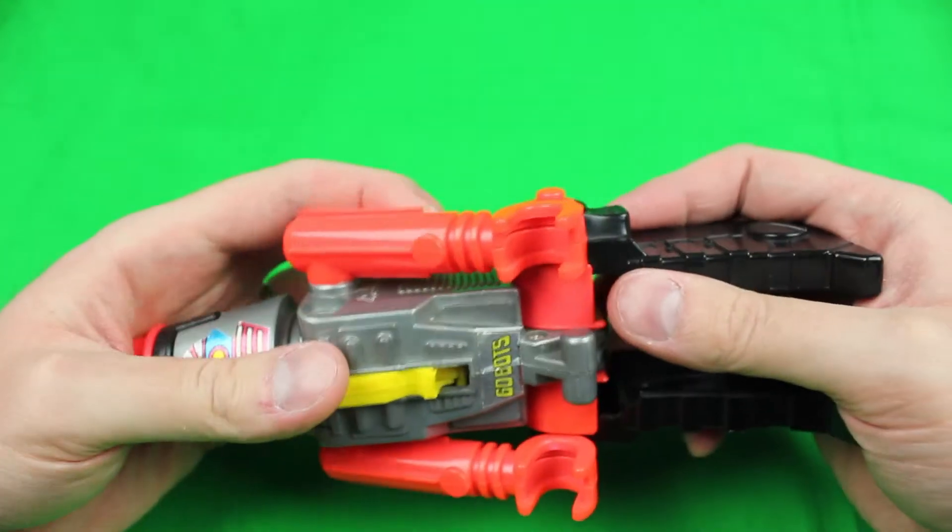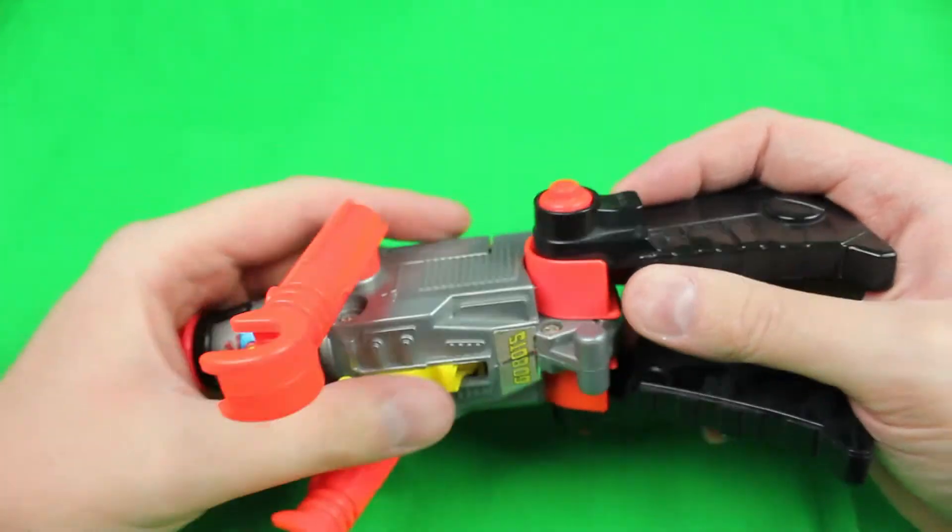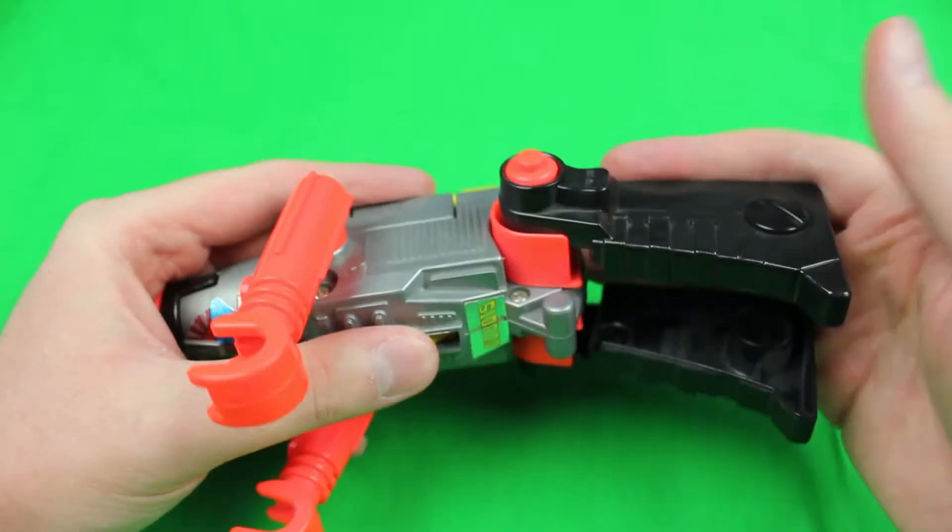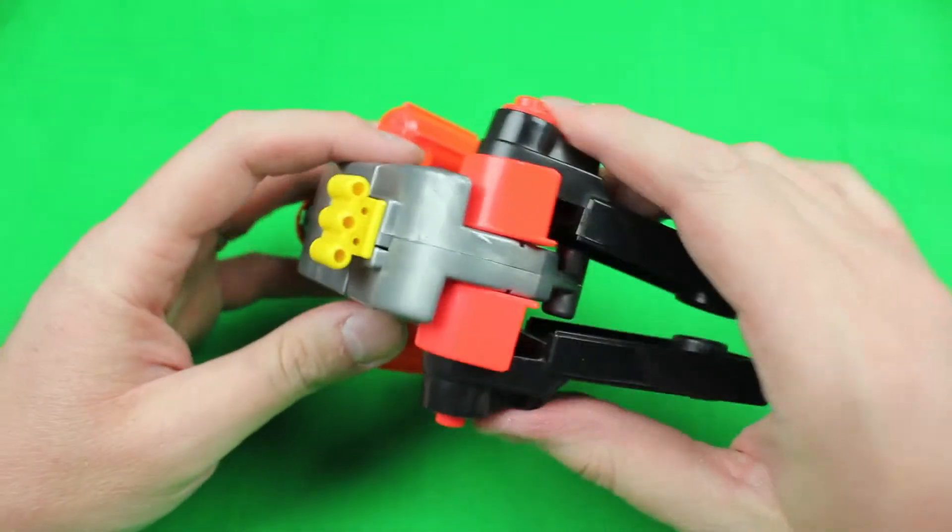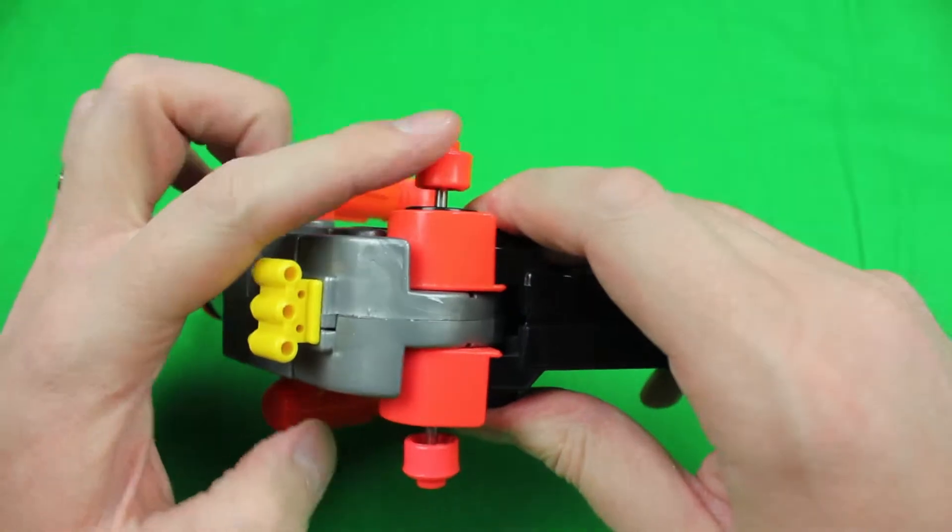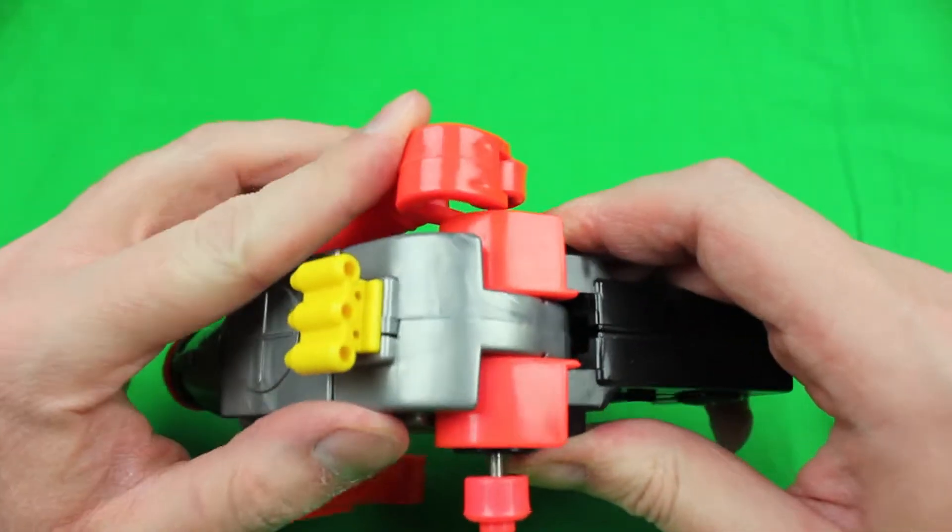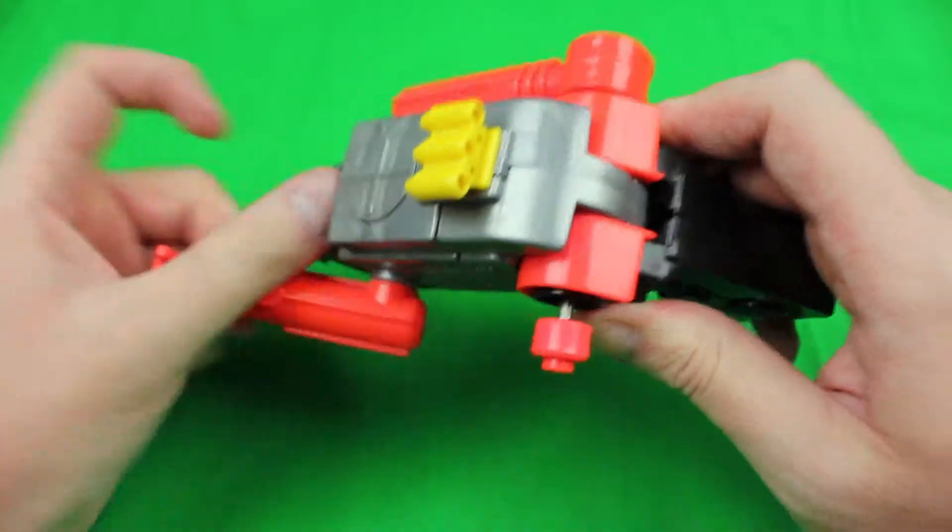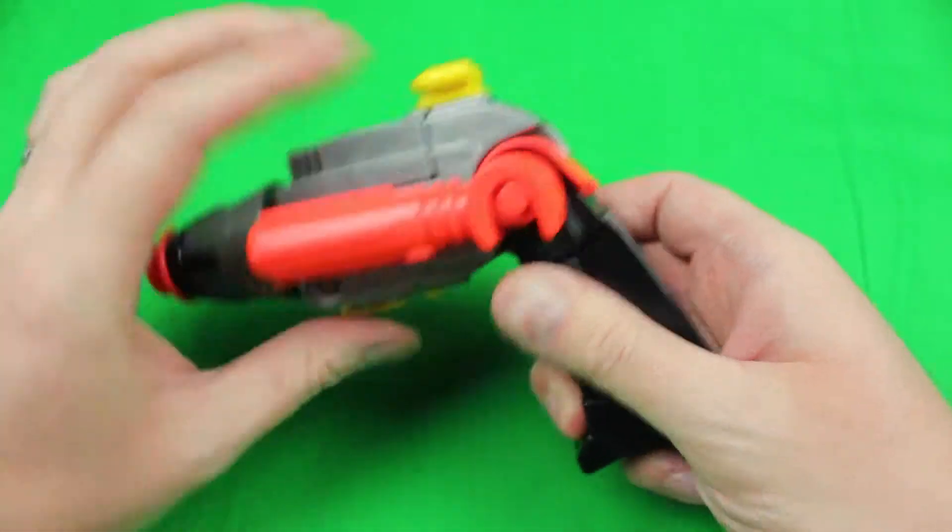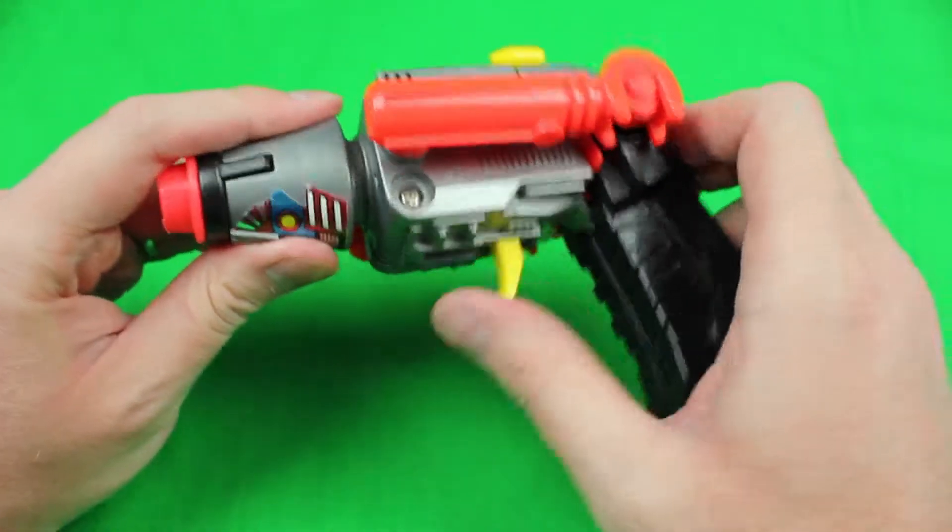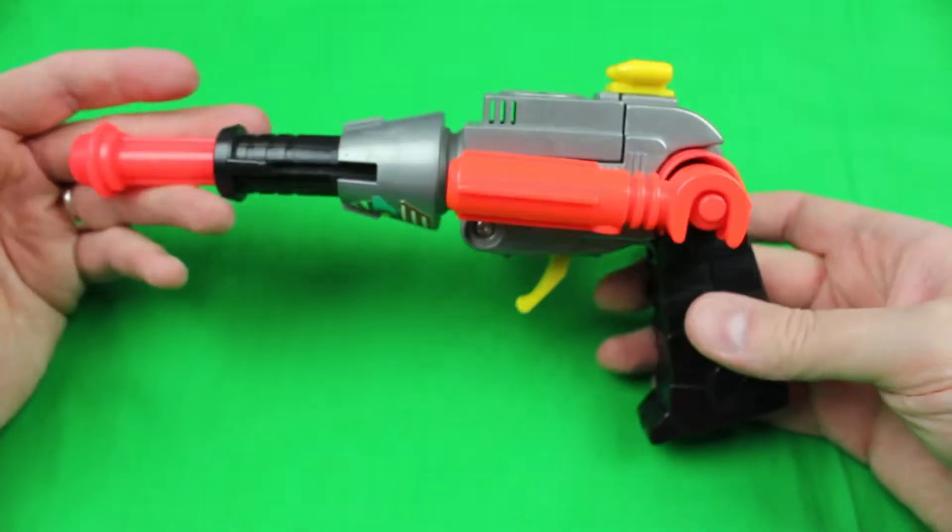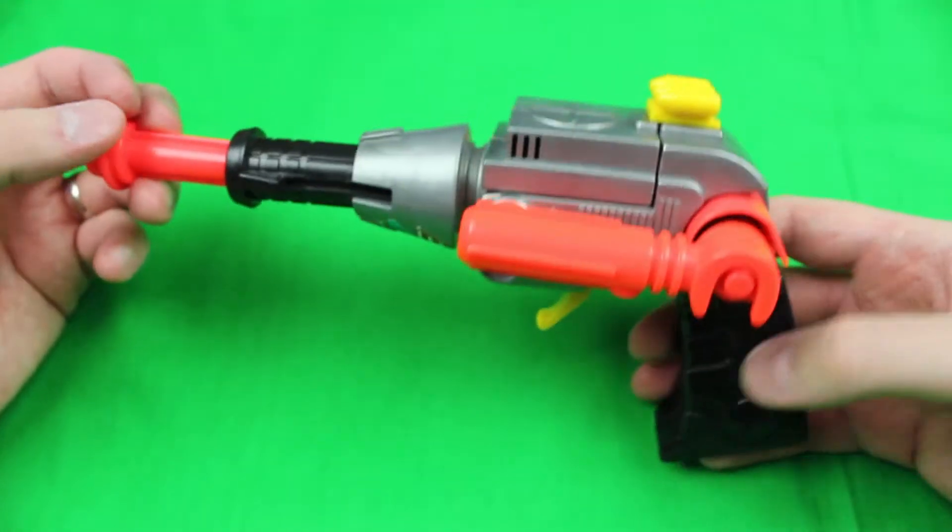So anyway, let's go ahead and turn him into a gun. Get his hands out of the way first, and then kick his legs forward. Squeeze them together. And you need to move his hands back to these pieces here like so. Pull the trigger down, extend the front, and that's it. That's him as a gun.